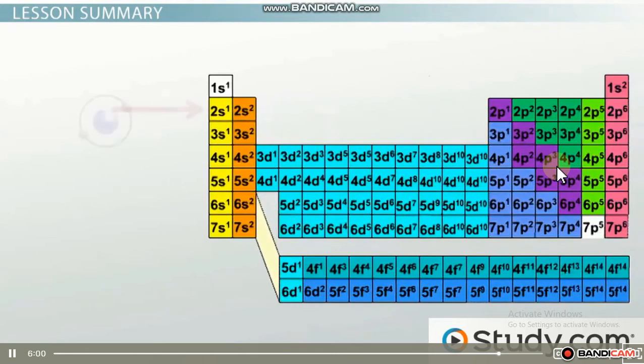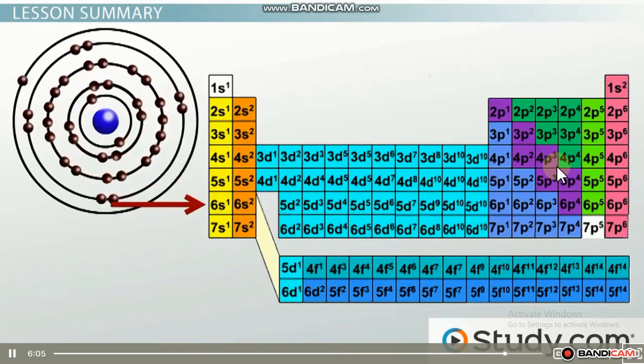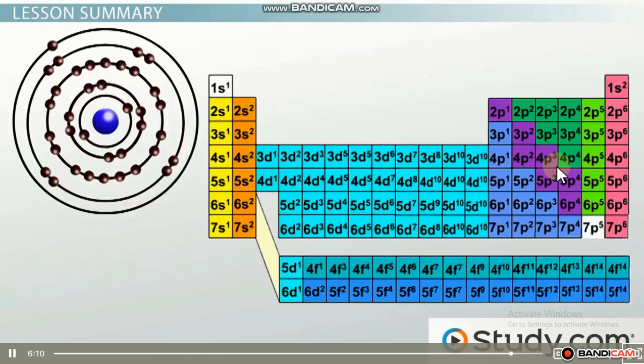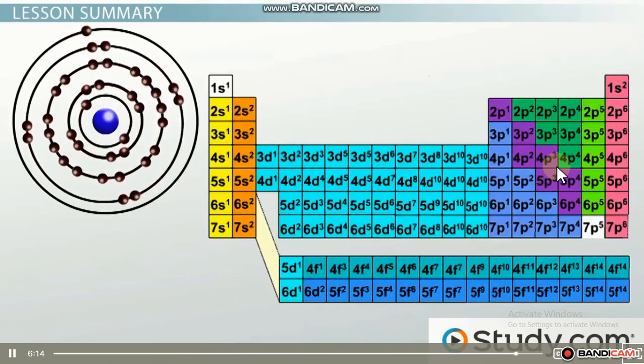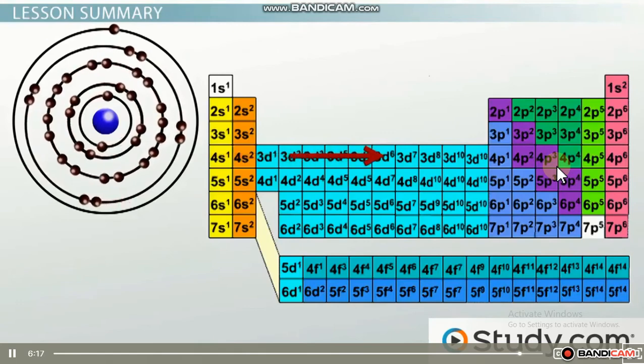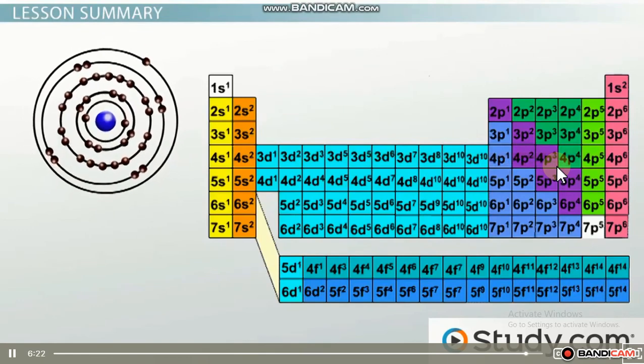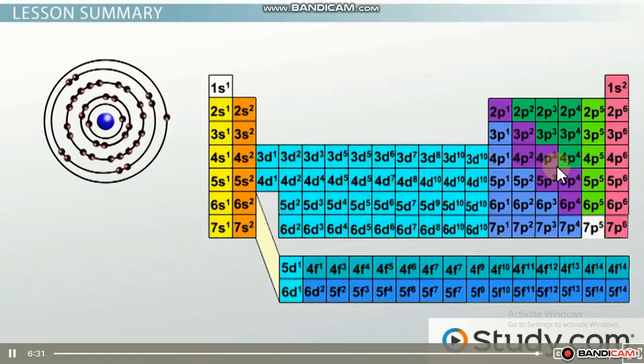So to review, as you move from top to bottom in the same group or column on the periodic table, the atomic radius will increase because new energy levels are needed to hold the electrons. These extra layers provide a much larger atom. However, as you move from left to right in the same period or row on the periodic table, the atomic radius will generally decrease because atoms will have the same number of energy levels, but the more positive protons in the nucleus will have a greater pull on the negative electrons, bringing them farther in.